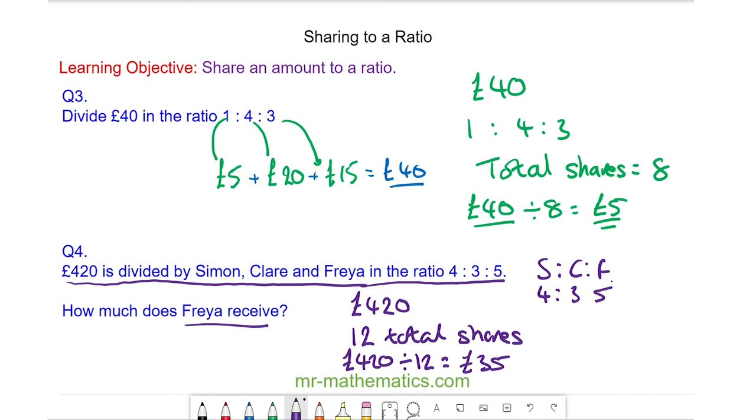And because Freya receives five lots of £35, she receives £175.